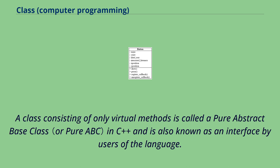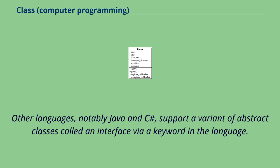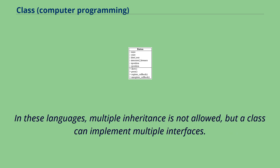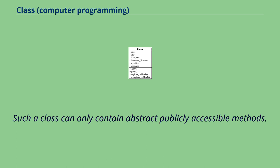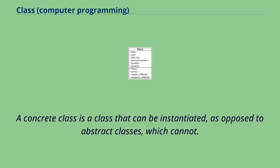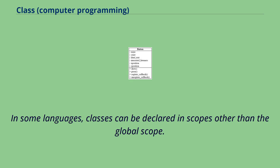In C++, an abstract class is a class having at least one abstract method. A class consisting of only virtual methods is called a pure abstract base class in C++ and is also known as an interface. Other languages, notably Java and C#, support a variant of abstract classes called an interface via a keyword in the language. In these languages, multiple inheritance is not allowed, but a class can implement multiple interfaces. Such a class can only contain abstract publicly accessible methods. A concrete class is a class that can be instantiated, as opposed to abstract classes which cannot.